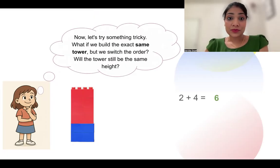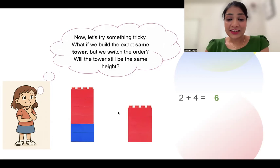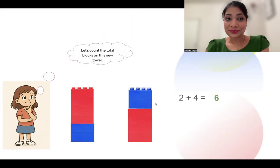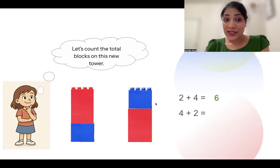Now let's try something tricky. What if we build the same tower, but we switch the order? Will the tower be of the same height? Let's try it. This time we keep four red blocks at the bottom and we stack our two blue blocks on the top. Now let's count the total. Four plus two is six.